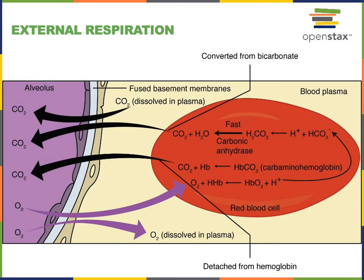When oxygen dissolves in the plasma, it can diffuse across the plasma membrane of erythrocytes and enter the cytoplasm of the red blood cell where it can bind to the protein hemoglobin. In this way, hemoglobin drastically increases the oxygen-carrying capacity of the blood by removing oxygen from the plasma, enabling continued diffusion of oxygen from the alveoli into the blood plasma as hemoglobin becomes saturated with oxygen.